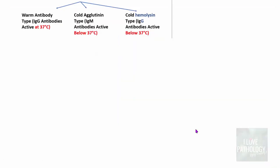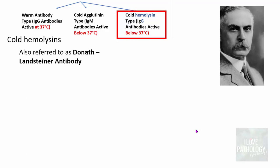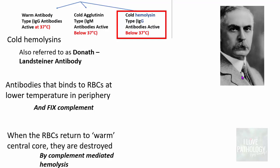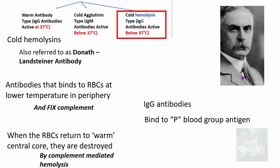The third type is cold hemolysin, also referred to as Donath-Landsteiner antibodies — named after Landsteiner, the father of modern blood banking. These IgG antibodies bind to RBCs at lower temperatures in the cooler periphery, fixing complement there. When the RBCs return to the warm central core, the antibodies are not dissociated, and the antibody-coated RBCs are destroyed by complement-mediated hemolysis. These antibodies characteristically bind to the P blood group antigen, which is a glycosphingolipid globoside found on RBC membranes.